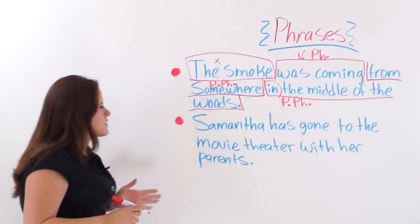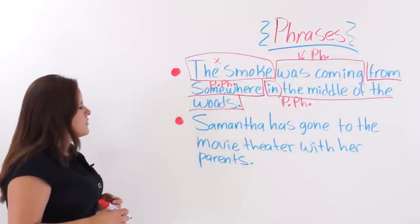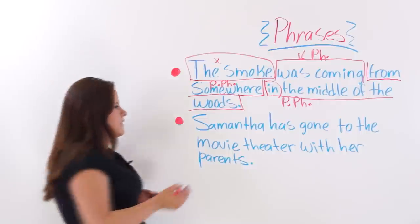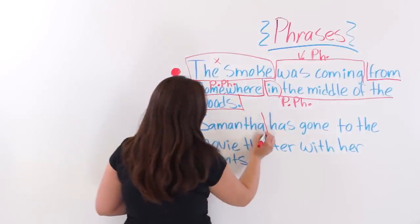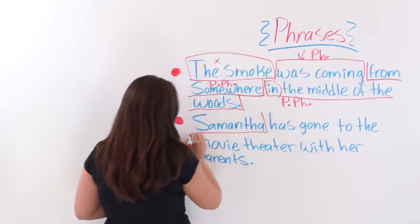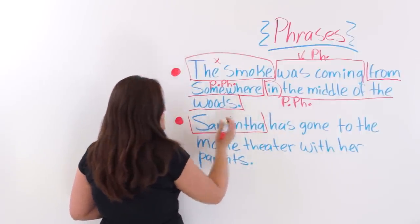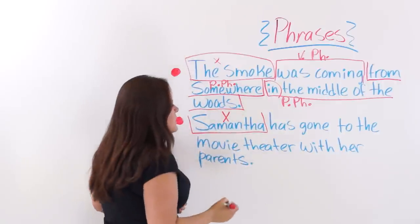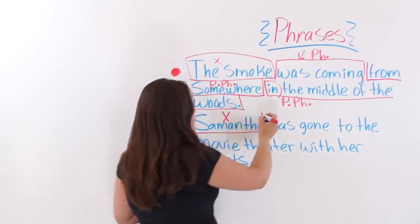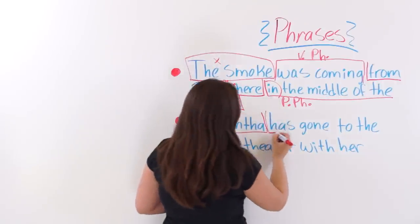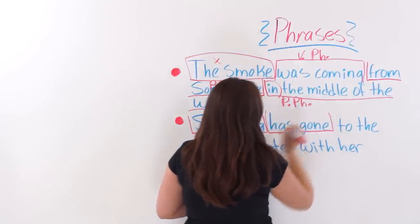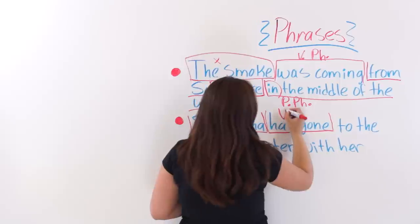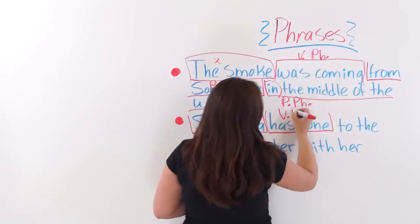The next sentence says: Samantha has gone to the movie theater with her parents. Right here we have 'Samantha' — we have the subject, so we're just going to forget about that one. 'Has gone' — what kind of phrase is this? This is a verb phrase.